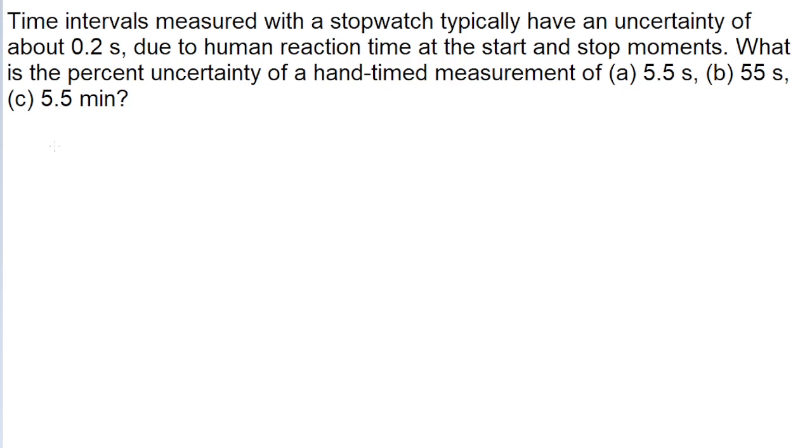The general process here is pretty simple. To find a percent uncertainty, all we have to do is take the uncertainty and divide it by the measurement.